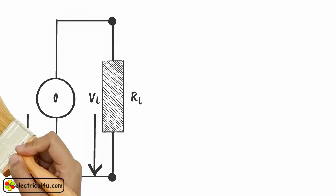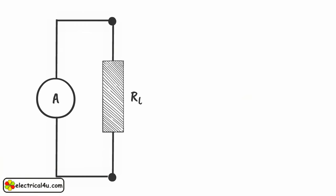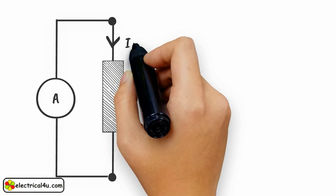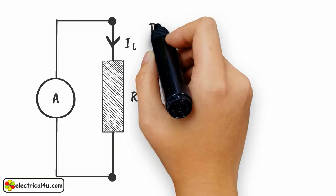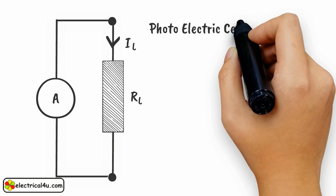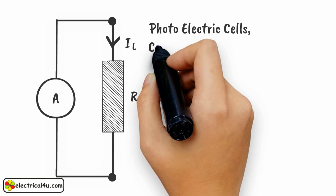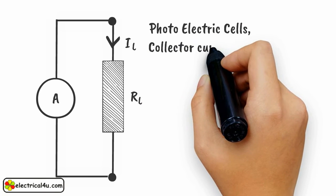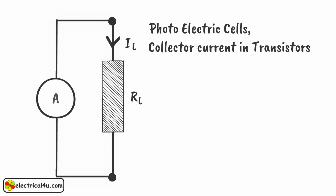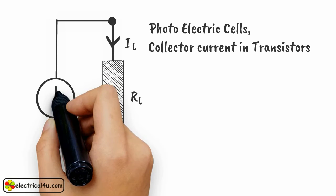In certain applications, a constant current flow through the circuit is required. When the load resistance is connected between the output terminals, a constant current IL will flow through the load. Examples of current sources are photoelectric cells, collector current in transistors, etc. The symbol of current source is shown here.